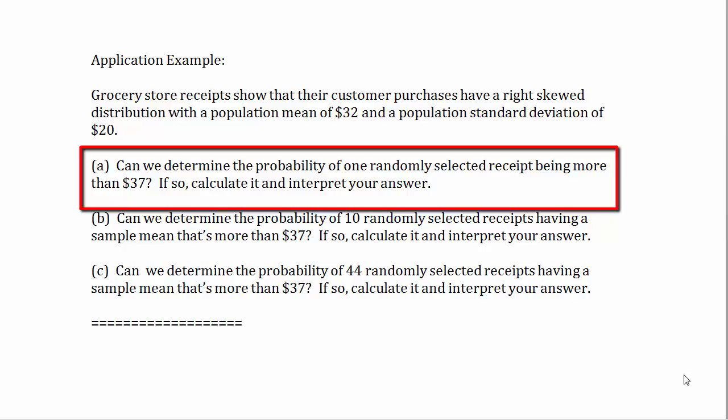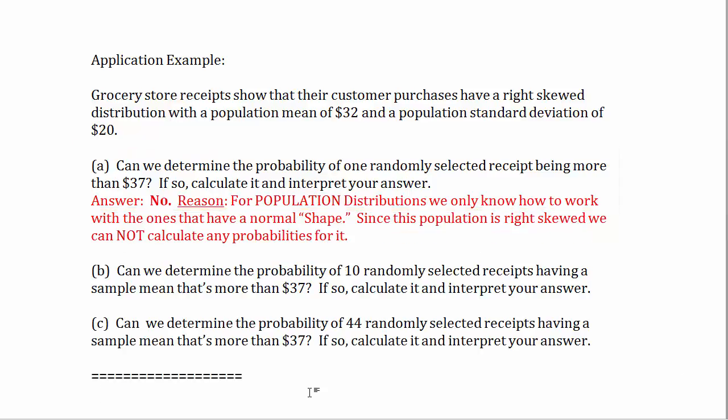To calculate the probability of one randomly selected value being in an interval such as more than $37, you need three things: the center of the distribution (the population mean), the spread (the population standard deviation), and you need to know the shape is normal. Since this population is right-skewed, we cannot calculate any probabilities for one randomly selected receipt being in some interval.